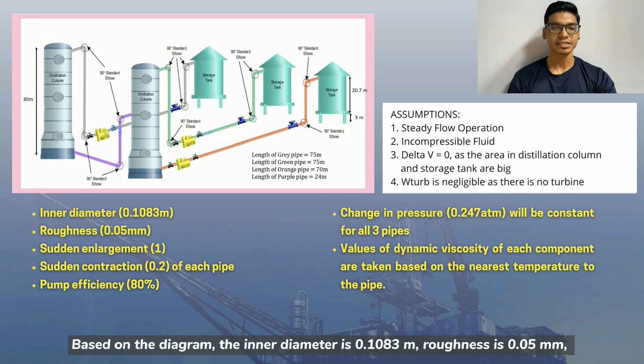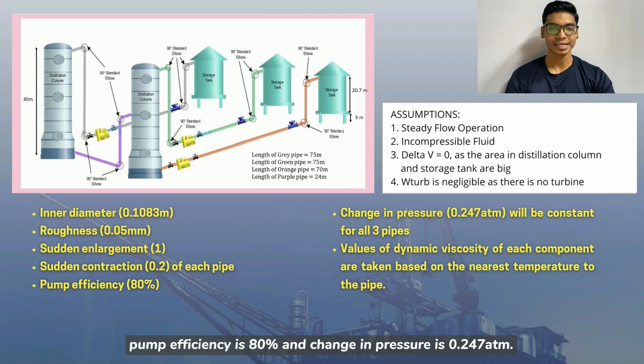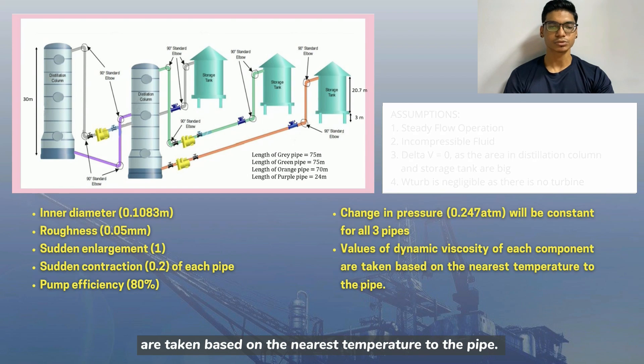Based on the diagram, the inner diameter is 0.1083 meter, roughness is 0.05 millimeter, sudden enlargement is 1, and sudden contraction is 0.2 for each pipe. Pump efficiency is 80% and change in pressure is 0.247 atm. It will be constant for all three pipes. Also, the values of dynamic viscosity of each component are taken based on the nearest temperature to the pipe.